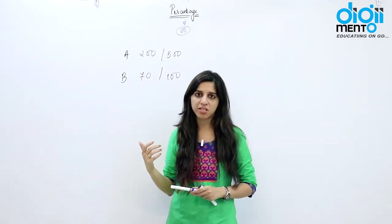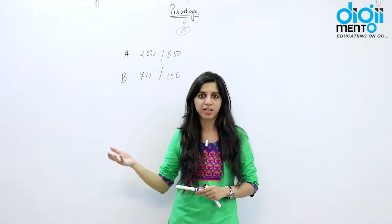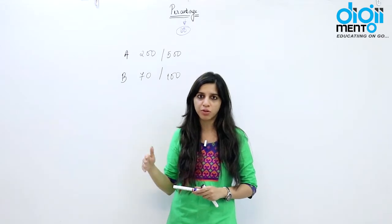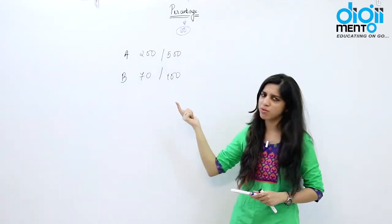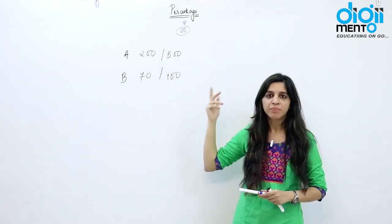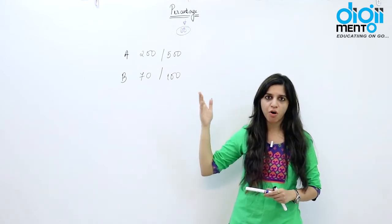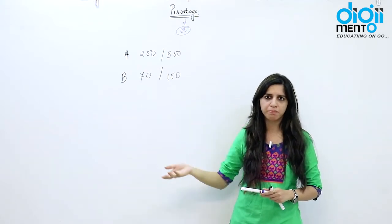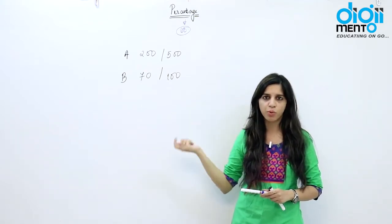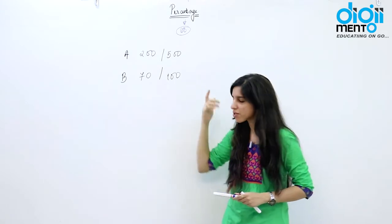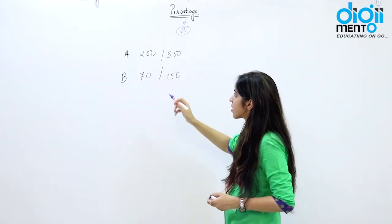That common reference point is commonly taken as 100. We scale down the total marks to 100 and then compare — if this examination were of 100 marks, how many marks would this candidate have got? Then we can compare it with B. This is how we use the concept of percentages to make comparisons of growths of countries, economic and financial growths, marks of students, and more.